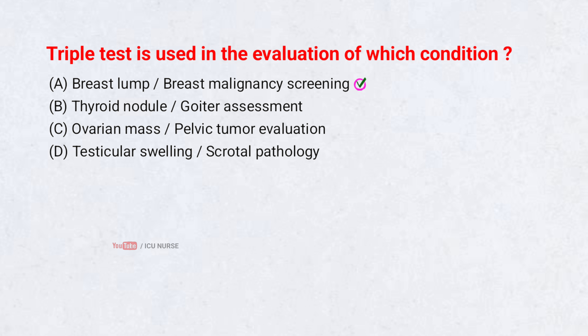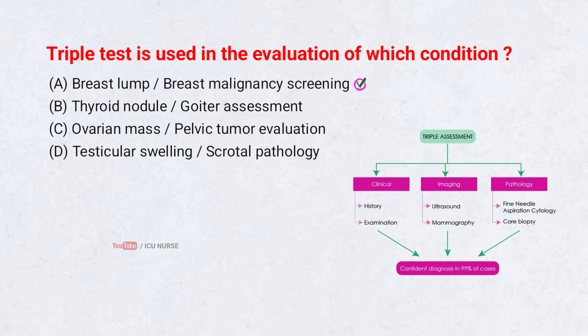Breast lump, breast malignancy screening. The triple test is primarily used for assessing a breast lump. It combines clinical examination, imaging (which includes mammography or ultrasound), and cytology or biopsy. Concordance of all three gives a near-definitive diagnosis.